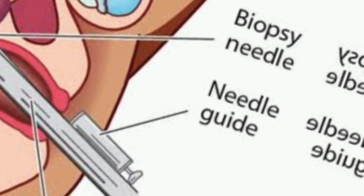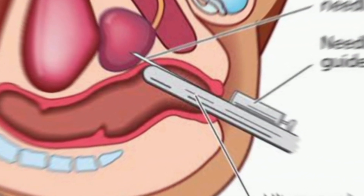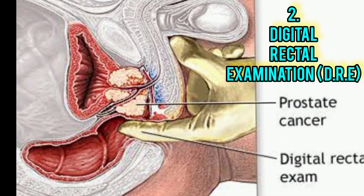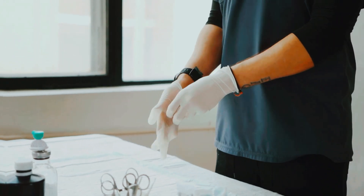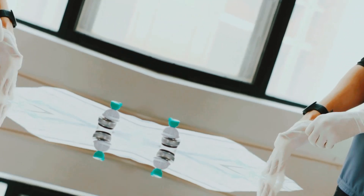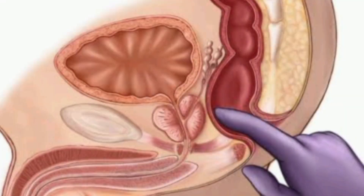When PSA levels are high, your doctor may recommend a biopsy to find out if you have prostate cancer. Number two: Digital Rectal Examination (DRE) — a healthcare provider inserts a gloved, lubricated finger into a man's rectum to feel the prostate for any abnormalities such as prostate cancer. Currently, many screening organizations do not routinely recommend this screening test because of a lack of evidence of benefit. In addition, many men are reluctant to undergo prostate cancer screening because of the discomfort they associate with the digital rectal examination.